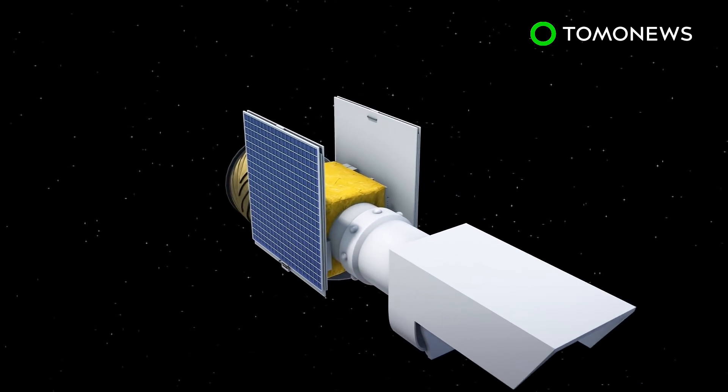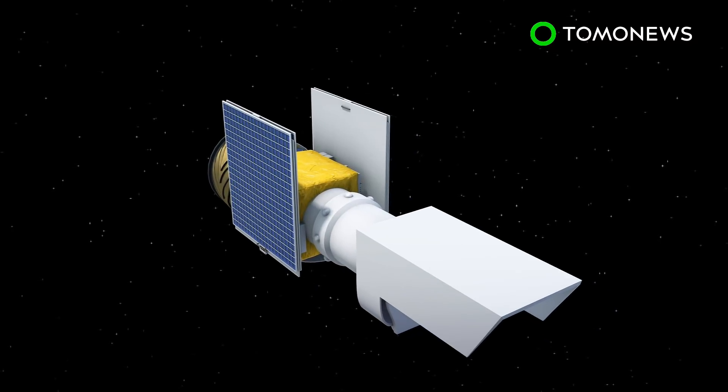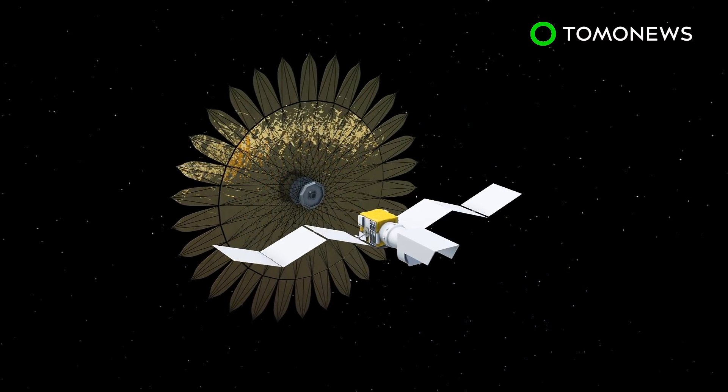NASA said the starshade technology would be used to block starlight. This would allow the telescope to get a clear view of any new orbiting planets in space.